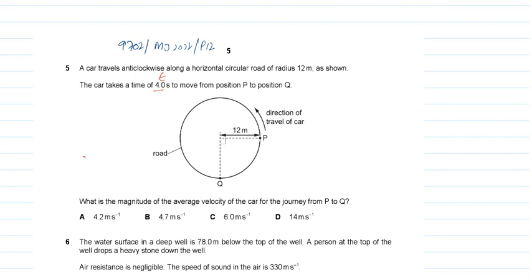What is the magnitude of the average velocity of the car for the journey from P to Q? For the average velocity, it will be total distance over total time. It will be your average velocity.